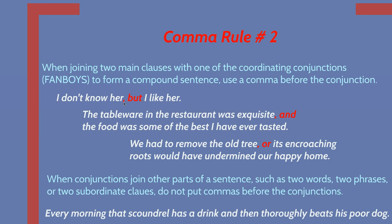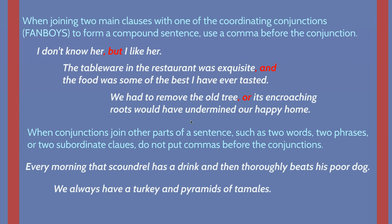Just because you have a FANBOYS word doesn't mean you automatically put a comma in front of it. When conjunctions join other parts of sentences — such as two words, two phrases, or two subordinate clauses — do not put commas before the conjunction. For example, 'We always have a turkey and pyramids of tamales.' Just because we see 'and' here does not mean there's a comma there — in fact, putting a comma there would be wrong because we don't want to separate 'pyramids of tamales' from the rest of the sentence. You want complete sentences on both sides of the comma and the FANBOYS word.